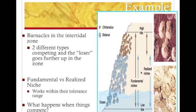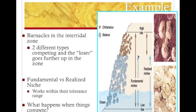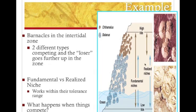A niche is different than a habitat. A habitat is the area — the home of the certain organism you're discussing. A niche is everything that that organism needs. There's a fundamental niche, which is any place that that plant or animal can live. So the fundamental niche of the brown barnacle was the entire intertidal zone. And then you get the realized niche — the brown one changed because of competition, and up here is the brown barnacle's realized niche. It's where it ended up living because of competition.